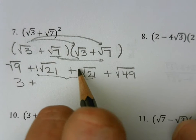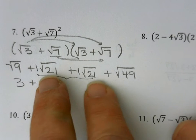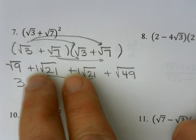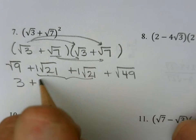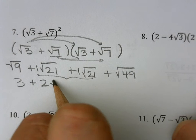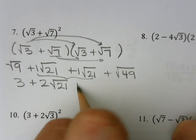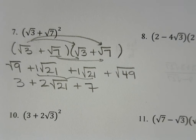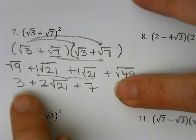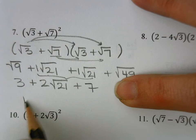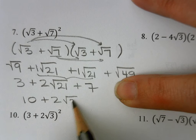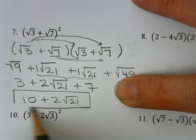Then I multiply the root 7 to both terms — square root of 3 times square root of 7, and then square root of 7 times square root of 7. The square root of 9 is 3, and I can combine the square root of 21 terms because they're both 21. With an implied 1 in front, when adding radicals they must have the same square root, then I add the coefficients: 1 plus 1 is 2, and the 21 stays the same. The square root of 49 is 7. Then I combine integers: 3 plus 7 is 10, and 2 square root of 21 has nothing to combine, so that would be my answer.